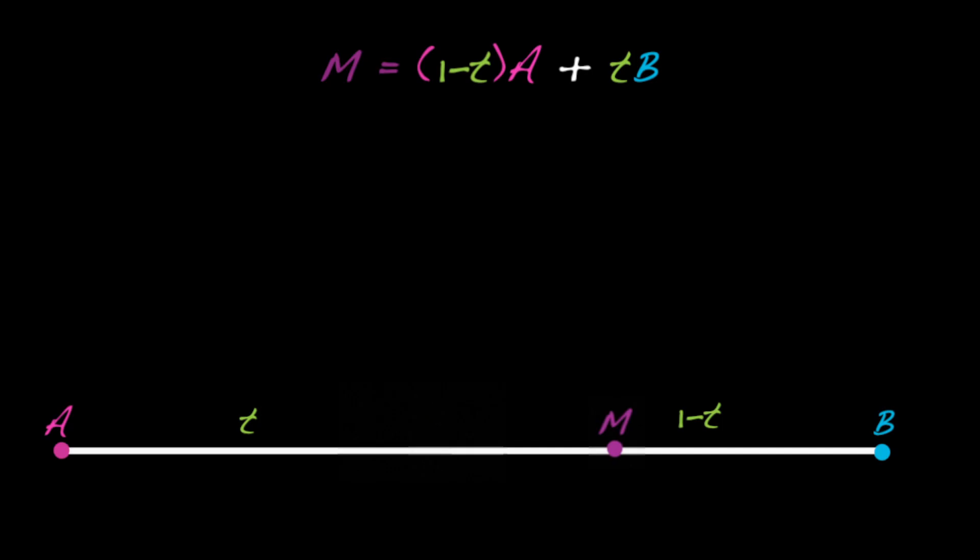We can rewrite the expression for m in a way that is easier to add more points. And that is, m equals little a times a plus little b times b, all of that divided by little a plus little b. Notice, we have to divide all of that by little a plus little b for the expression to be a proper average.